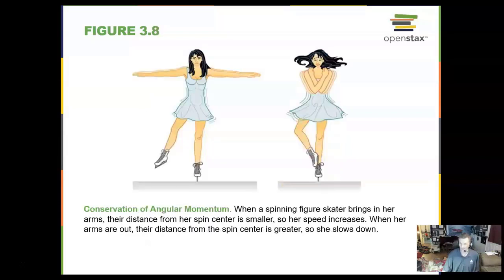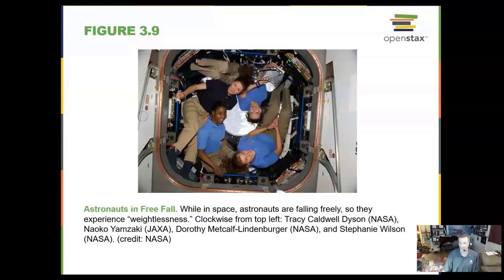Conservation of angular momentum says that when this speed skater pulls her arms in, she will start to rotate fast to conserve that angular momentum. These astronauts don't look like they are in free fall, but they sure are — here in the cupola module of the International Space Station, which is their window on the world.